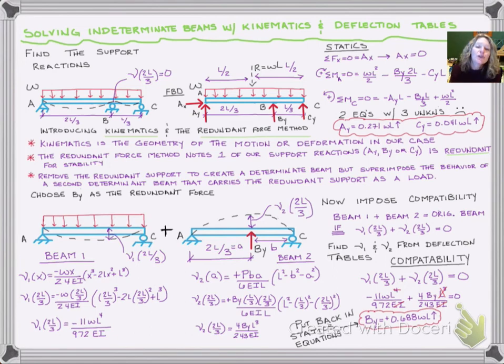The big thing to remember with the redundant force method: pick one of your redundant supports to take away so the beam is still stable. We can't take away AX or we'd be unstable. Draw a new determinate beam with the original loading, then add a matching determinate beam with the same support conditions and add the redundant force.